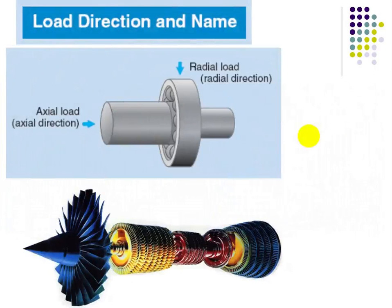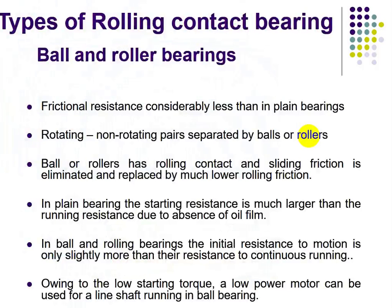In bearing topics, the load direction and name are most important. The load on a bearing can be applied in the axial direction or in the radial direction. In some cases an axial load is applied, and in other cases a radial load is applied. Axial load means the load is parallel to the shaft, whereas radial load means the load is perpendicular to the shaft.